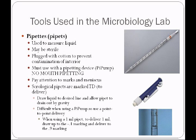Serological pipettes, the type we use in our lab, are marked TD. You would use a different type in a chemistry laboratory, which are usually marked TC. TD means to deliver and TC means to contain. A to-deliver pipette is going to deliver the amount that you draw up, which means everything must come out of the pipette — it has to be drained out by gravity, so you don't blow out these pipettes like you would with a TC pipette. A to-contain pipette has to be blown out to get everything out.